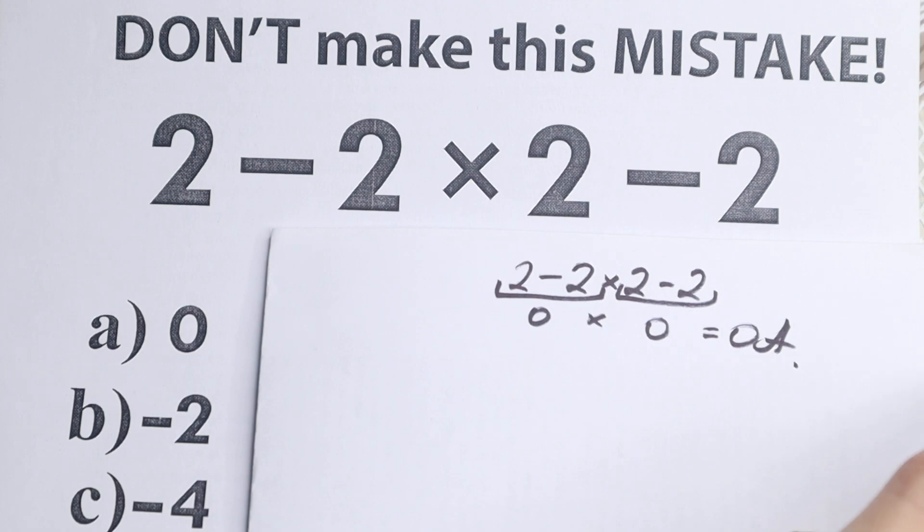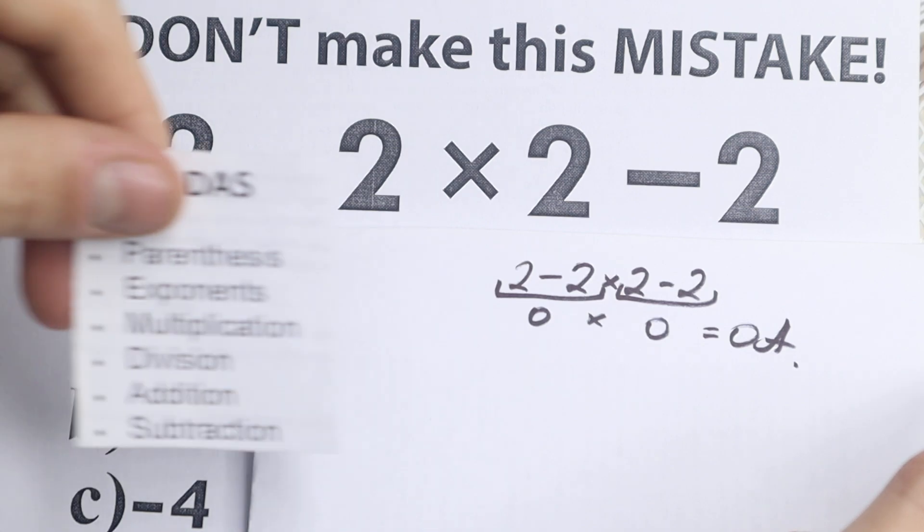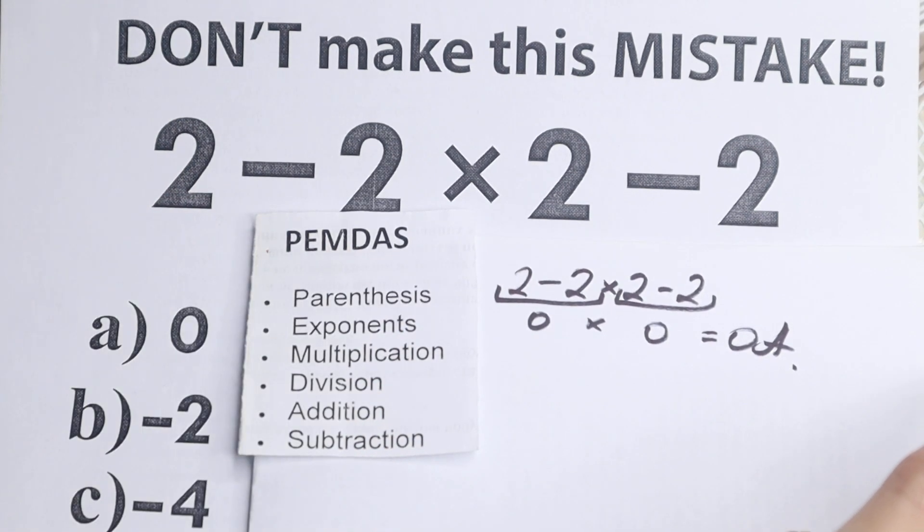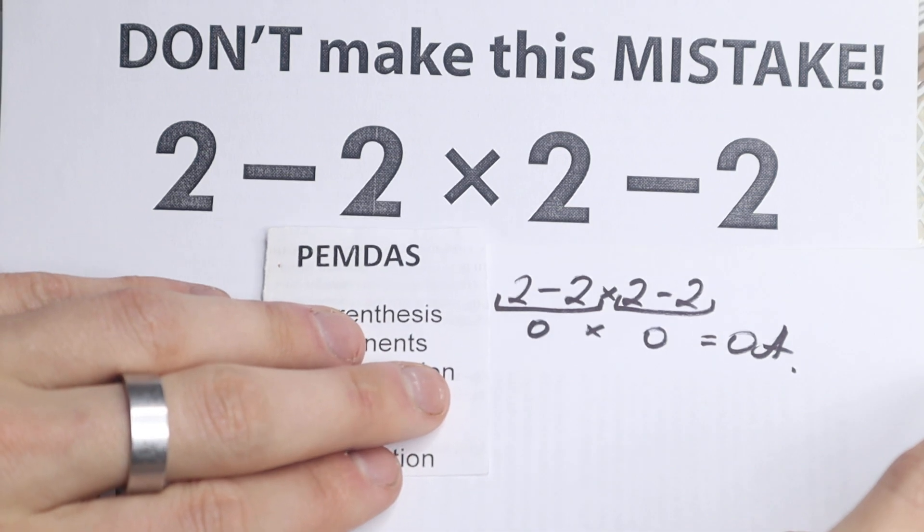But what is the correct answer? As you can see, whatever order we select is going to create a different answer. So we need to understand the correct order. For this, we have PEMDAS order, the main popular order in the world. All internet libraries and scientific graphing calculators work according to this PEMDAS order.